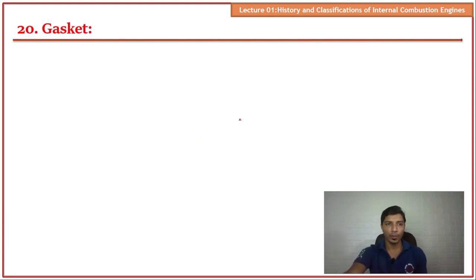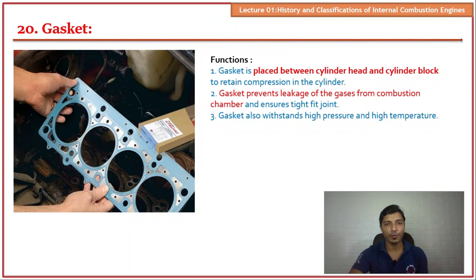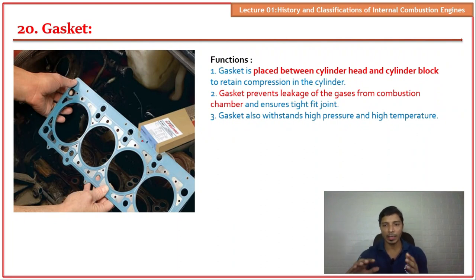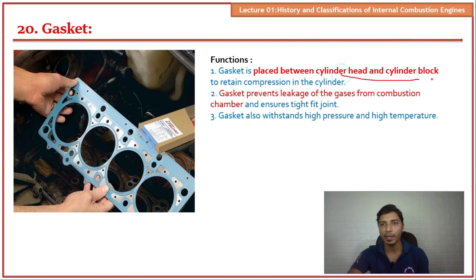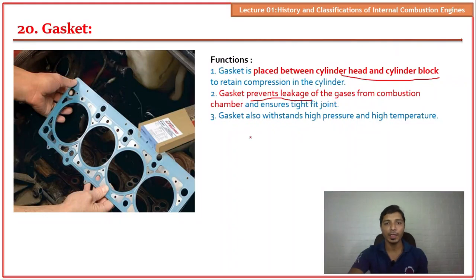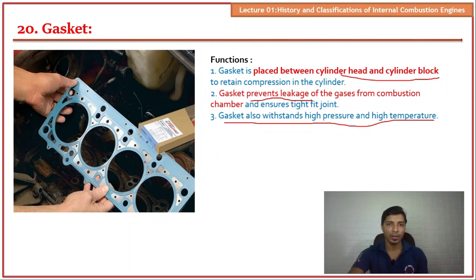The gasket is a very important component. In some cases, oil escapes from the engine and appears on the outer surface — this happens when a gasket fails. Gaskets are placed between different components, such as between the cylinder head and cylinder block, to prevent leakage. Gaskets must also withstand high pressure and high temperature, so their material is selected and they are designed accordingly.